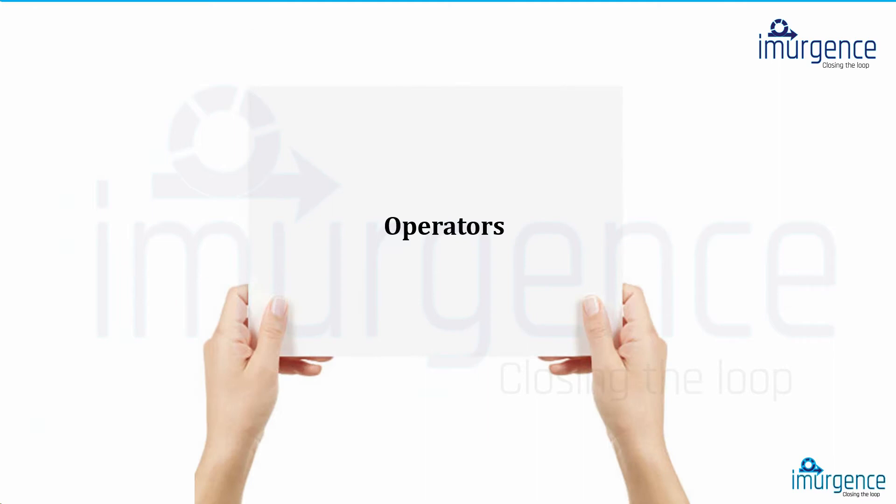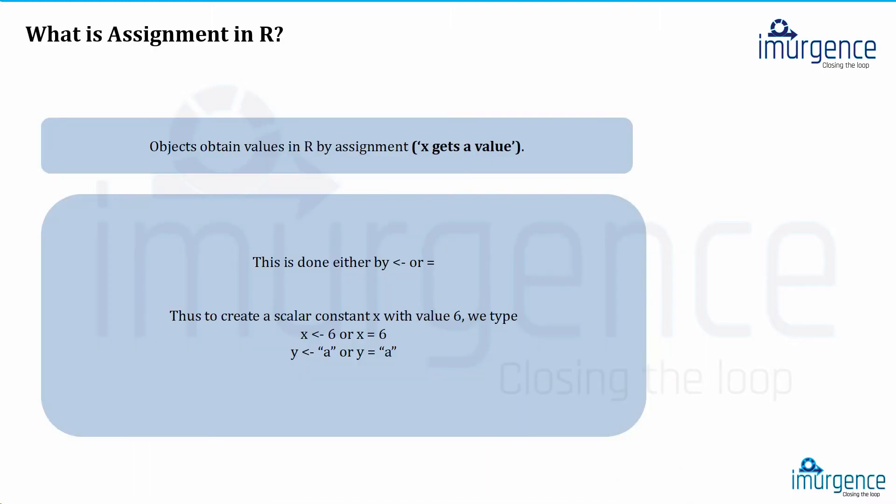So operators—basic operators which we usually know as the mathematical operators sometimes. So what is assignment in R? When you see a symbol like a less than with a dash, or a single equal to, that basically means an assignment operator.